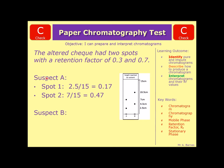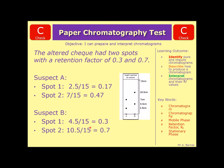So it's fairly certain that suspect A is not the criminal, but we need to make sure suspect B is, because neither of them might be guilty. For suspect B: 4.5 divided by 15 gives 0.3 — a good start. The second spot: 10.5 divided by 15 gives 0.7. Both match up, so we can say that suspect B is the criminal.